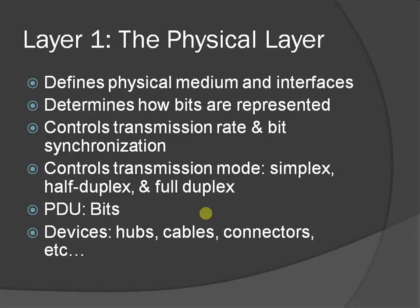First layer: the Physical layer. It defines the physical medium and interfaces, determines how bits are represented, controls transmission rate and bit synchronization, and controls transmission mode — Simplex, Half Duplex, and Full Duplex. The PDU at this layer is bits. Devices include hubs, cables, connectors, and so on.